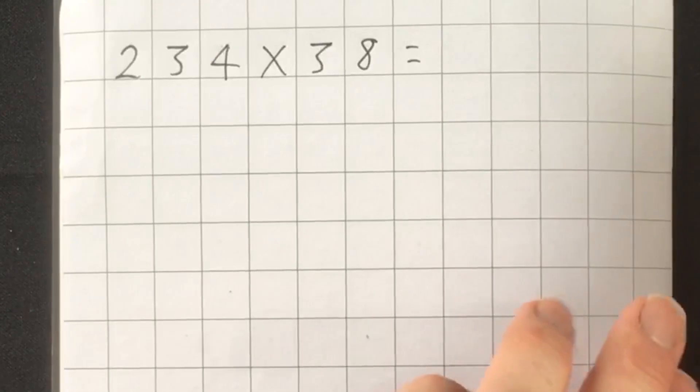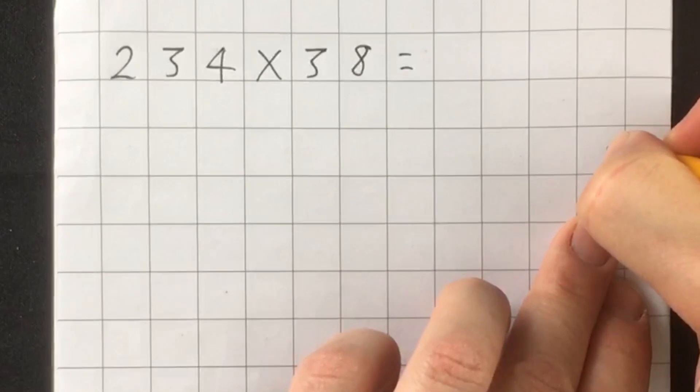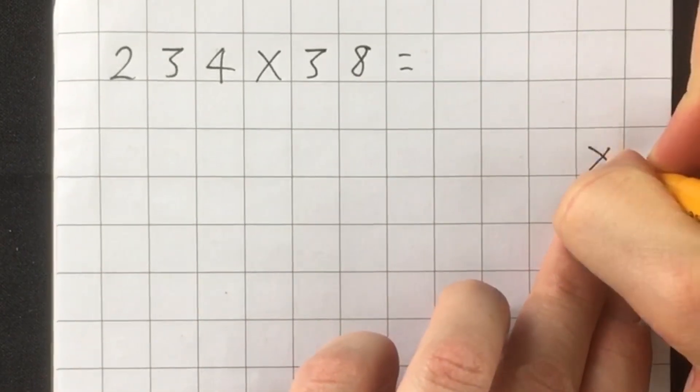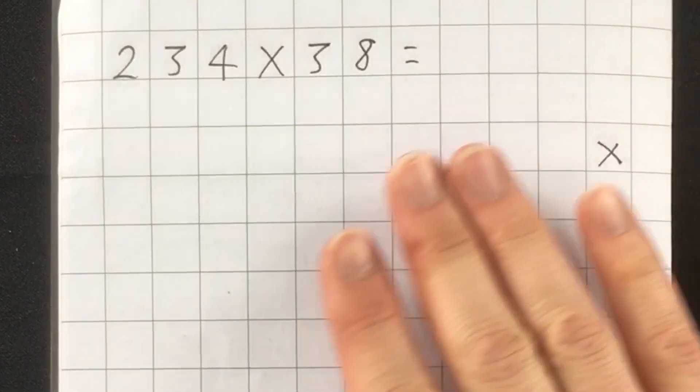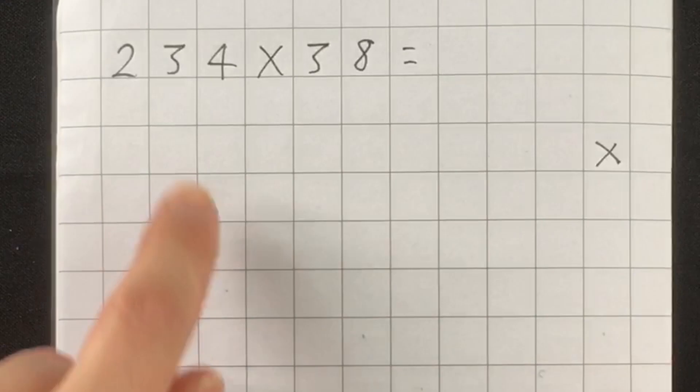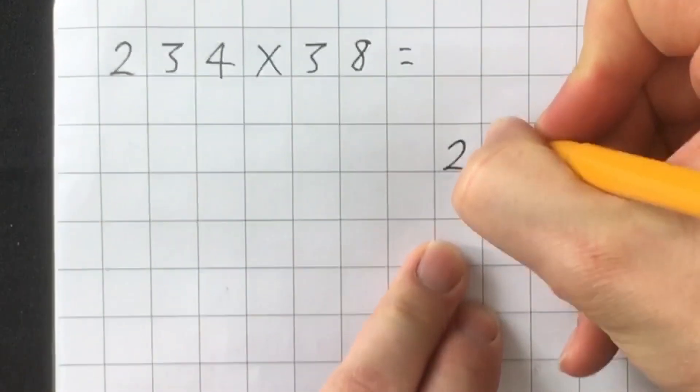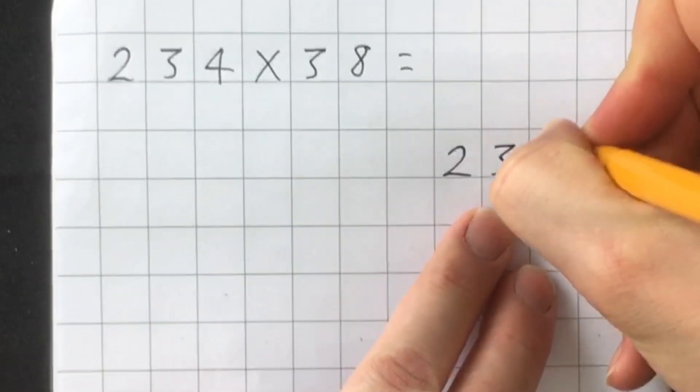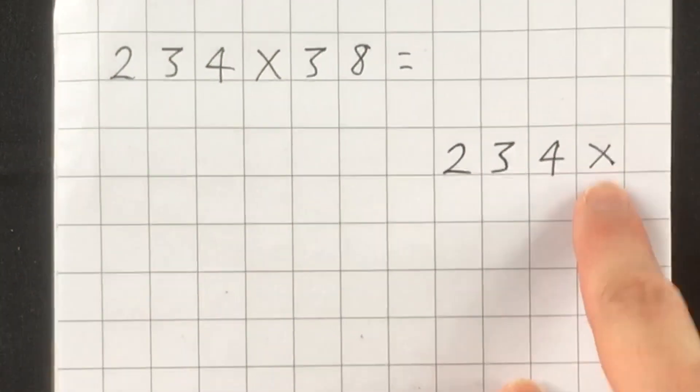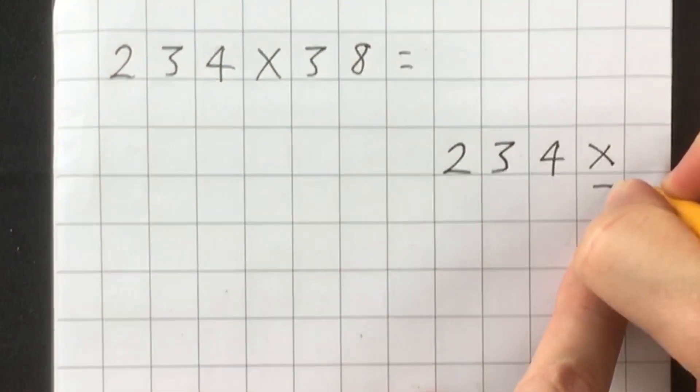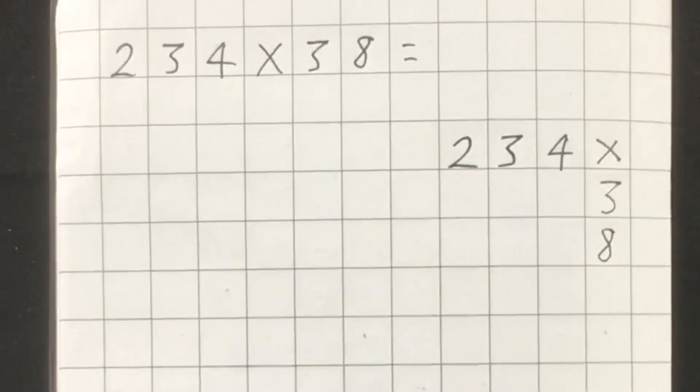Step one, you need to leave yourself enough room to do the calculation. So I'm going to leave a couple of lines and put a multiplying symbol all the way on the right-hand side of my page because the calculation is going to drift across the page this way. I now write my first number, two hundred and thirty-four, making sure that I put one digit in each square on its own. The second number, thirty-eight, I'm going to write down the side as thirty and eight. Now I'm going to draw a grid.